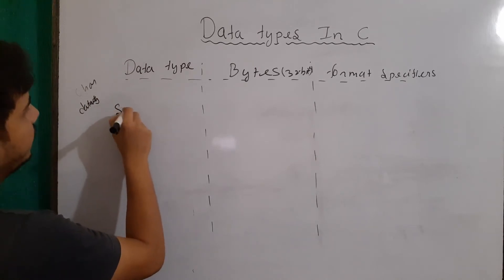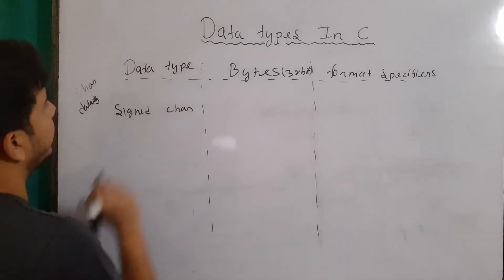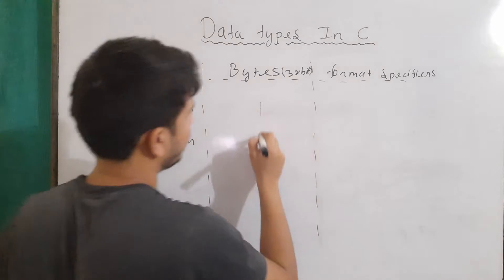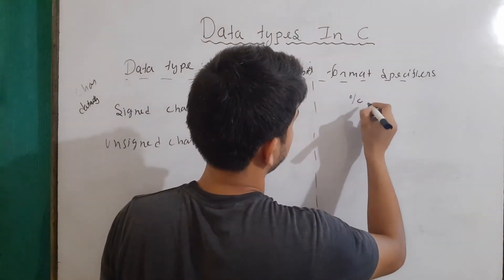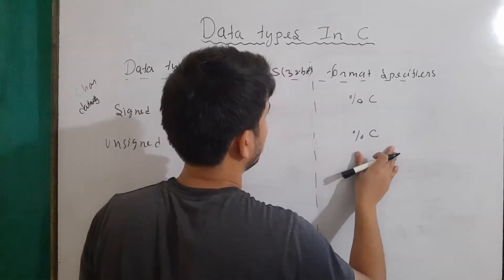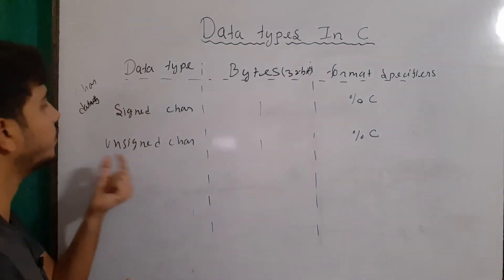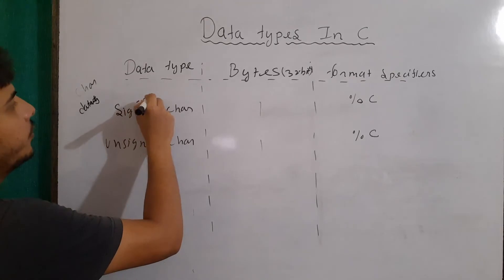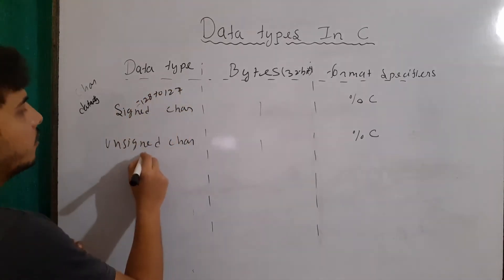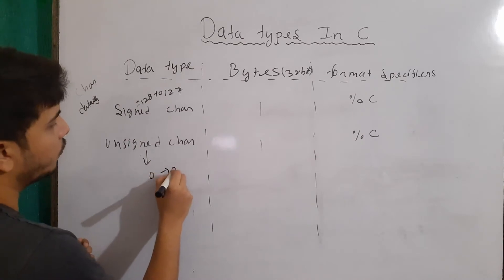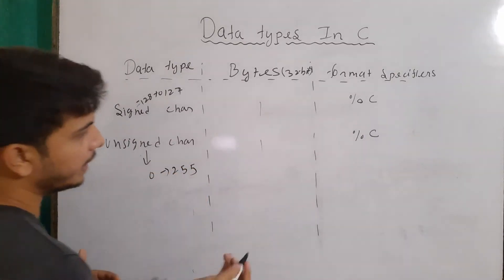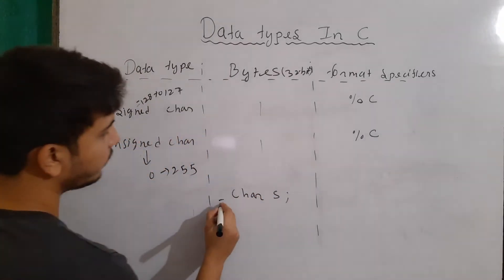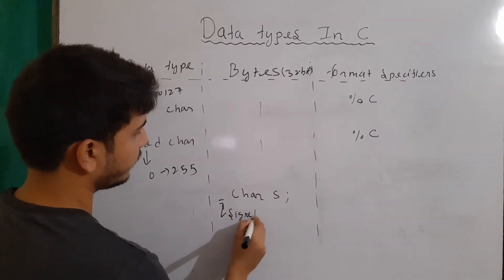Char data types could be signed char and unsigned char. The bytes are 1 for both and the format specifier is %c for both of them. Now, remember that the range of unsigned char will be more than the range of signed char. For signed char, it is generally minus 128 to 127, and for unsigned char, it is 0 to 255. Note that in C programming language, when we simply declare a variable with char and nothing is written here, by default it is treated as signed character or signed data type.